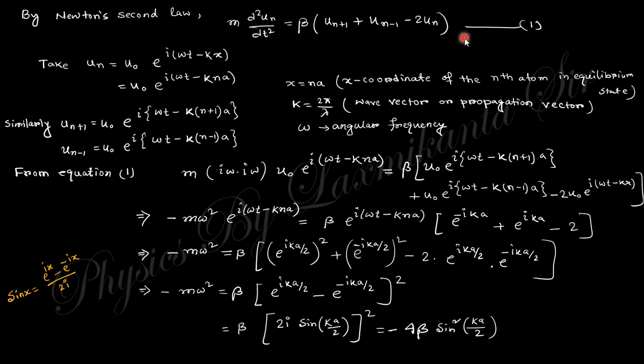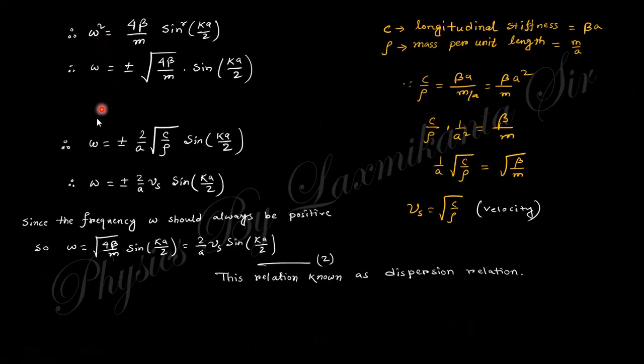Using Newton's second law, mass times acceleration equals force. Taking the trial solution of this nth displacement and putting this value, you will obtain this relation. Finally, you will get the value of omega, the angular frequency related with the wave number. This relation is actually known as the dispersion relation, which shows the relation between omega and k.